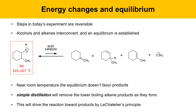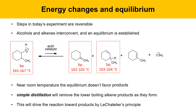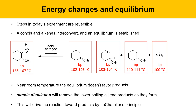The starting alcohol has a high boiling point of 165–167°C due to strong intermolecular forces from hydrogen bonding on the OH group. The product alkenes are lower boiling — they can't form hydrogen bonds and lack dipole-dipole interactions, so they're less polar with weaker intermolecular forces. Boiling points: 102–103°C for methylene cyclohexane, 103–104°C for 3-methyl cyclohexene, and 110–111°C for 1-methyl cyclohexene. Water boils at 100°C, so all products boil lower than the starting material.